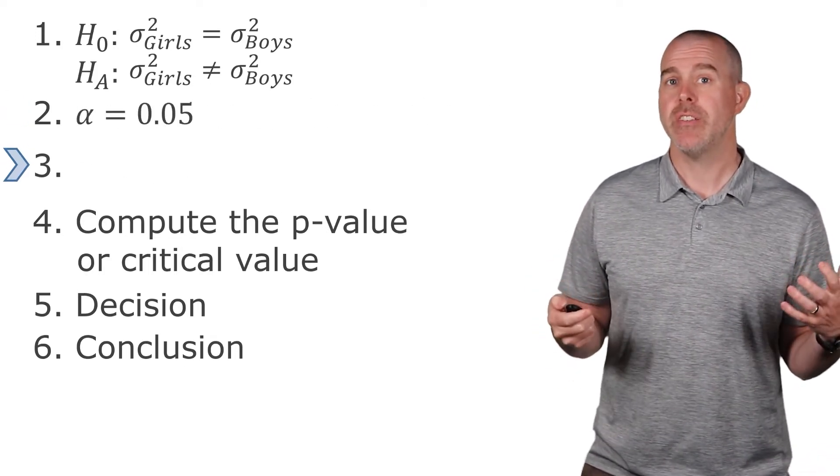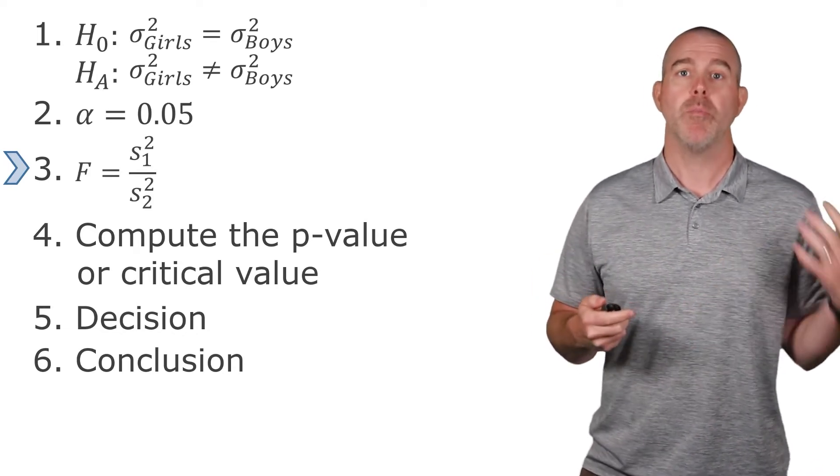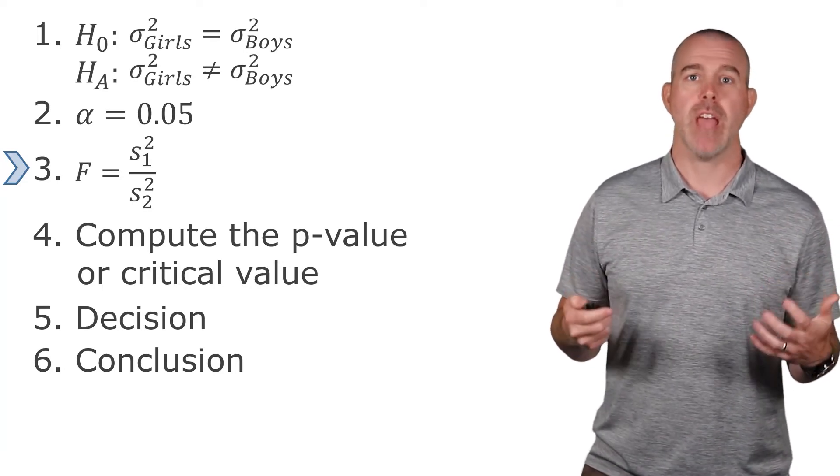Our test statistic. Again, this is that F test statistic. Now, we certainly could compute the variance of one, compute the variance of the other, and take the ratio. We're just going to do this in StatCrunch.